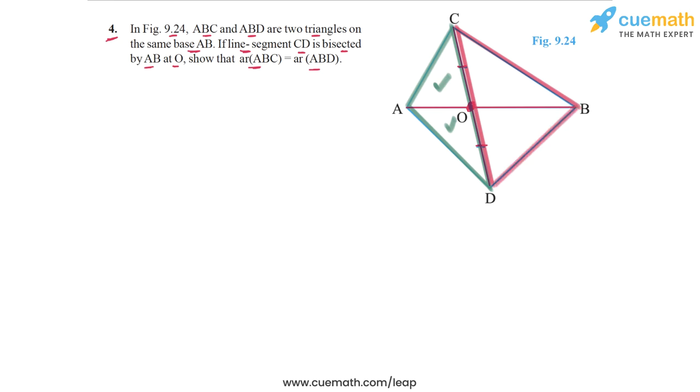In this triangle, because O is the midpoint of CD, we have BO as a median of this triangle. BO will divide this triangle into two parts of equal areas. So the area of triangle BOC and the area of triangle BOD will be equal.